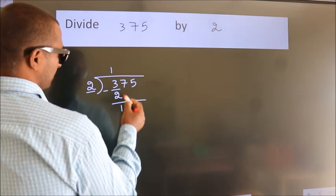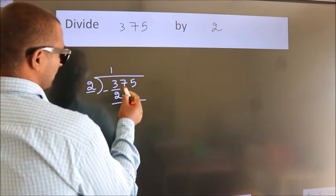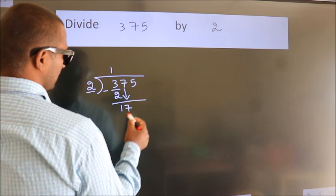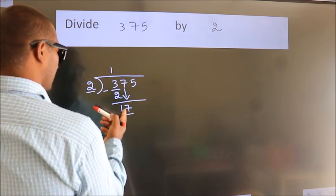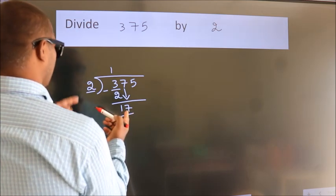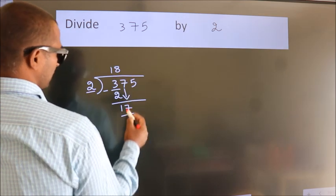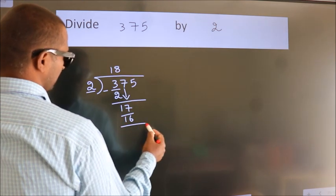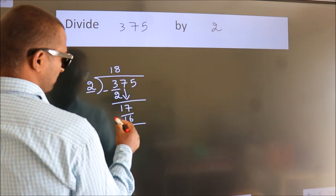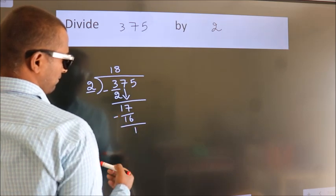After this, bring down the beside number. So 7 down. So 17. A number close to 17 in 2 table is 2 8s, 16. Now we subtract. We get 1.